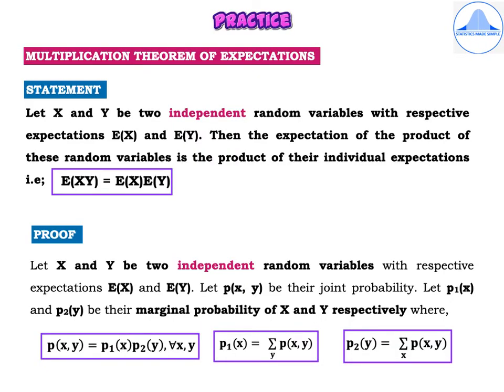I will now explain the Multiplication Theorem of Expectations. The statement is: let x and y be two independent random variables with respective expectations E(x) and E(y). The word 'independent' is very important and is highlighted in pink — if you miss it, the result cannot be proved. Then the expectation of the product of these random variables is the product of their individual expectations. That is, E(xy) = E(x)·E(y).